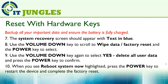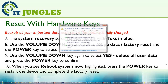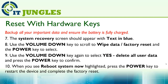The system recovery screen should appear with text in blue. Use the volume down key to go down to wipe data or factory reset, and use the power key to select. Use the volume down key again to select yes, delete all user data, and press the power key to confirm. When you see reboot system now, highlight it and press the power key to restart the device and complete the factory reset.